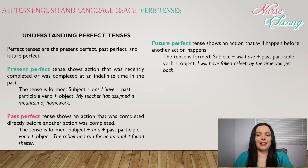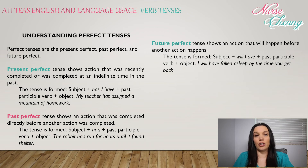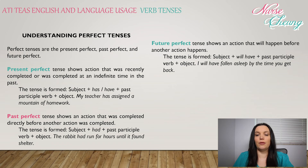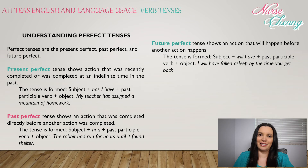Future perfect tense shows an action that will happen before another action happens. It is formed: subject + will have + past participle verb + object. For example: 'I will have fallen asleep by the time that you get back.'